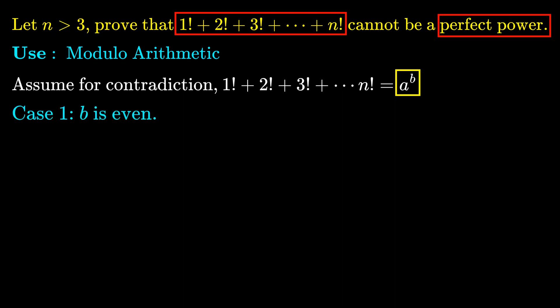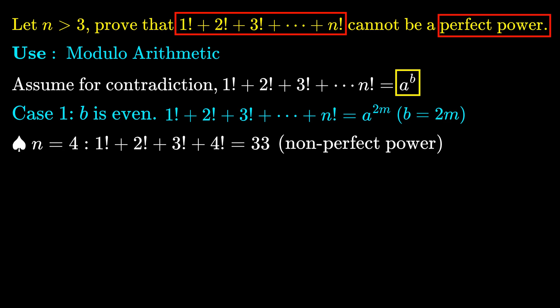The first case is when b is even. That is, the sum of first n factorials is a perfect square, and we let b = 2m, where m is a positive integer. For n = 4, 1! + 2! + 3! + 4! = 33, which is a non-perfect power.